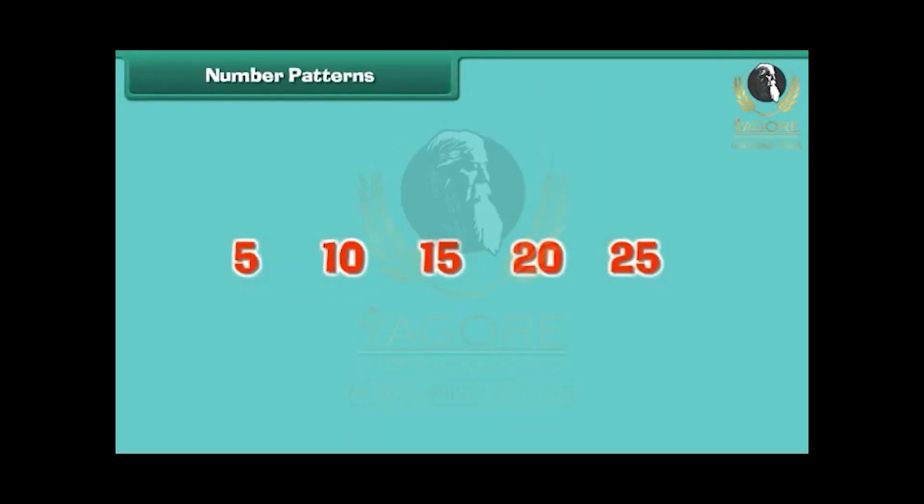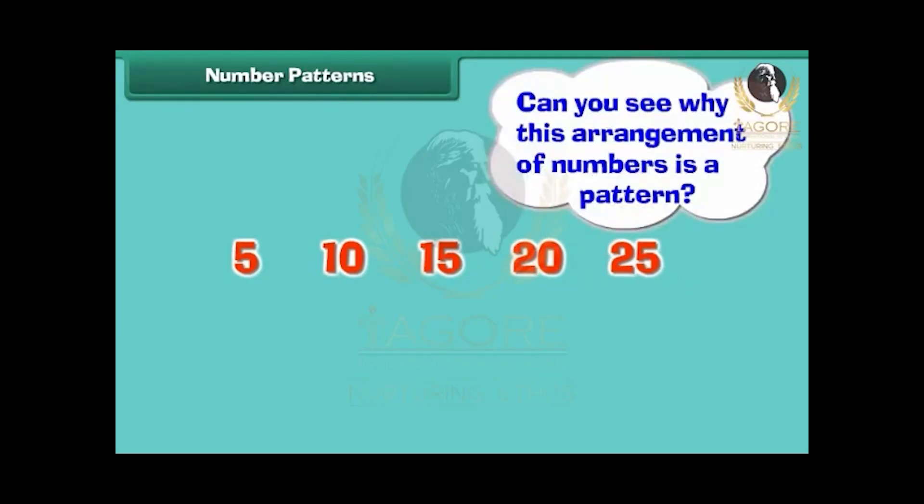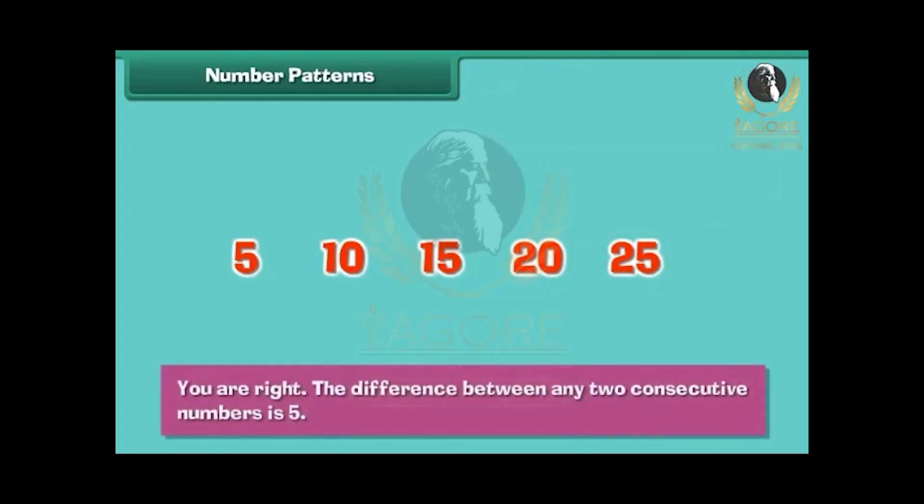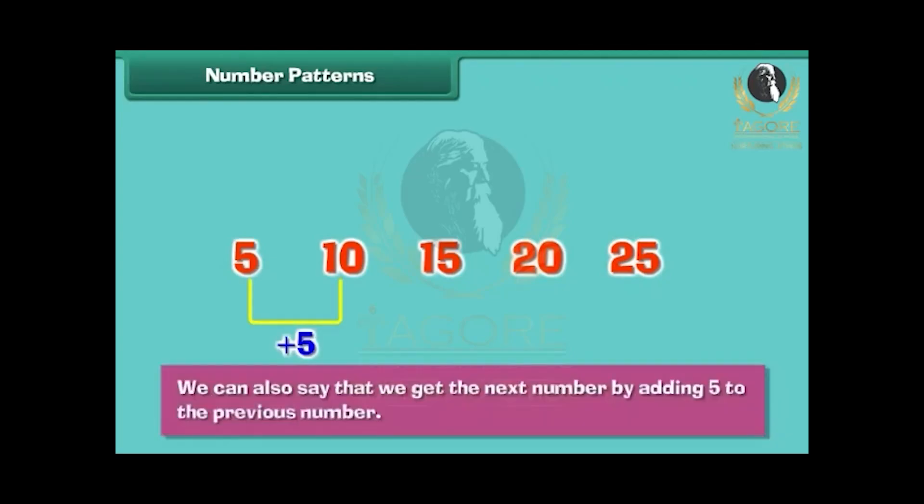Let us look at another number pattern. Five, Ten, Fifteen, Twenty, Twenty-five. Can you see why this arrangement of numbers is a pattern? You are right. The difference between any two consecutive numbers is five. We can also say that we get the next number by adding five to the previous number.